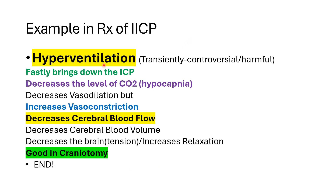Hyperventilation could be helpful in the treatment of increased intracranial pressure, but we have to use it for a short time. There is a lot of controversy surrounding its use here. It might be helpful, but at the same time could be harmful when used for too long. It will bring down the intracranial pressure very quickly. That is useful. It will decrease the level of CO2, giving us apocapnia, and will decrease vasodilation and also increase vasoconstriction.